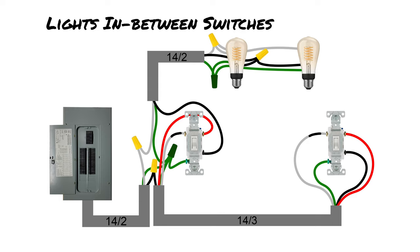Now let's look at another example where instead of power going through both switches and then to the lights, the lights are wired in between the switches. This is another common setup you might see in your house, and it's a little trickier because we're going to change up the wires used on the three-way switches. You can see there are sections of 14-2 wire and one section at the bottom using 14-3, which again runs between the switches.